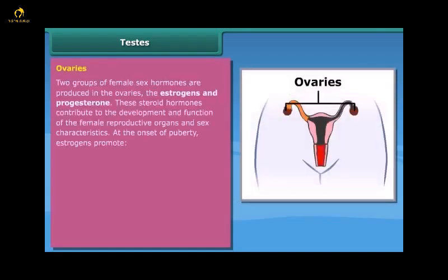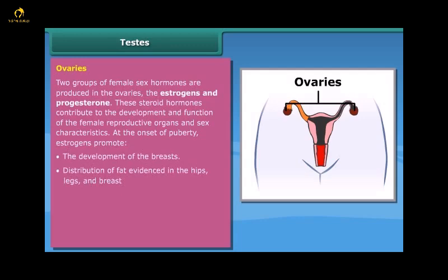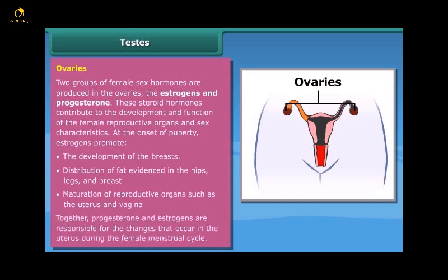Ovaries: the two groups of female sex hormones produced in the ovaries are the estrogens and progesterone. These steroid hormones contribute to the development and function of the female reproductive organs and sex characteristics. At the onset of puberty, estrogens promote the development of the breasts, distribution of fat in the hips, legs and breast, and maturation of reproductive organs such as the uterus and vagina. Together, progesterone and estrogens are responsible for the changes that occur in the uterus during the female menstrual cycle.